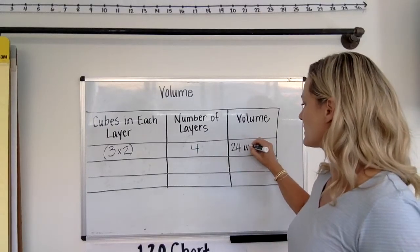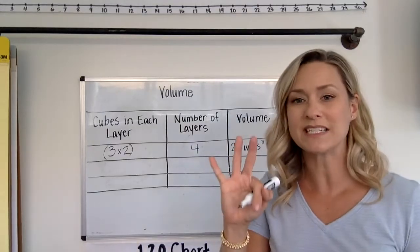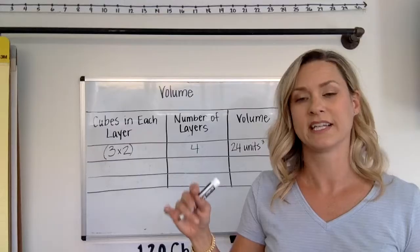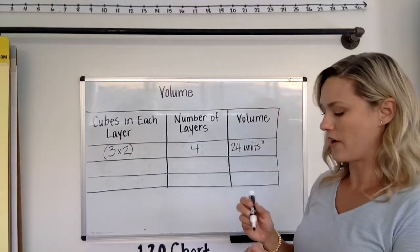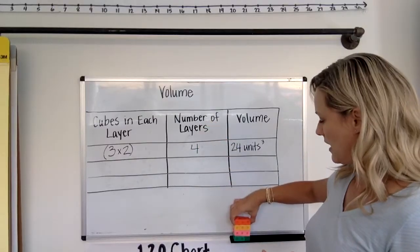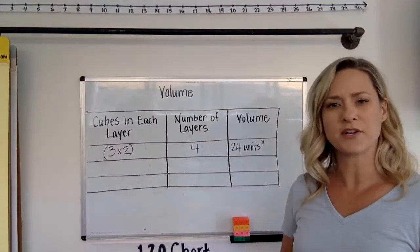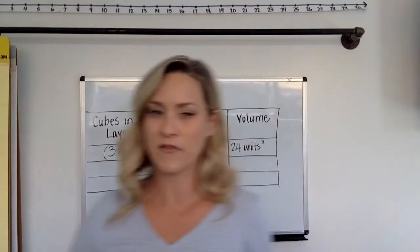So 3 times 2 is 6, and 6 four times is 24. Now I need to write units, and I'm gonna put a little 3. That 3 stands for three dimensions: length, width, and height. So that means cubic units or units cubed. I'm gonna set this here and pull out another cube that also has 24 units cubed.